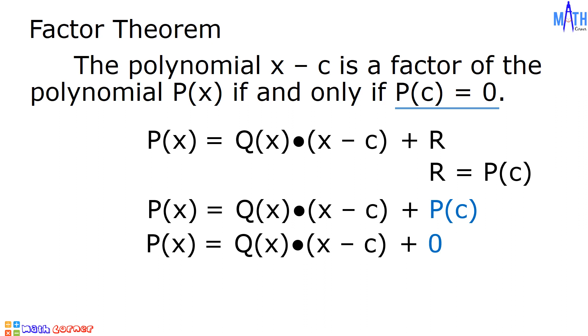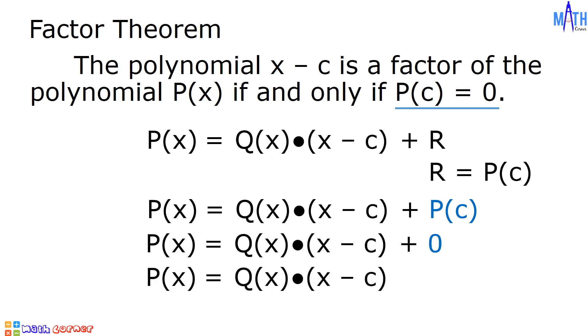Therefore, we have p of x is equal to q of x times the quantity x minus c. And this is the proof of the factor theorem.